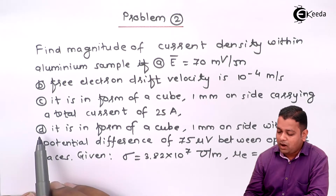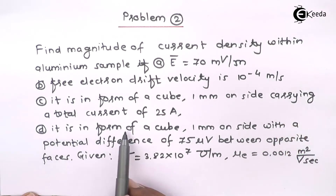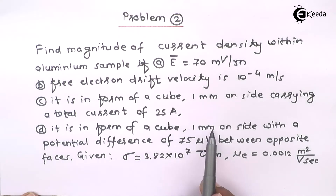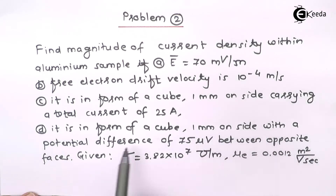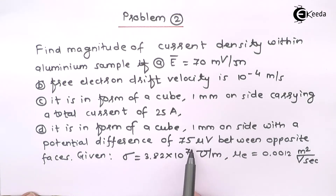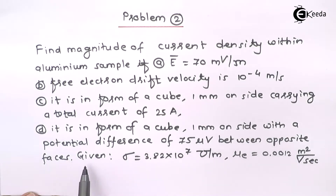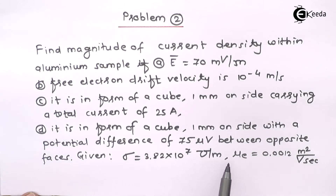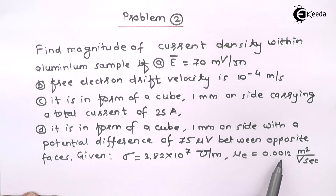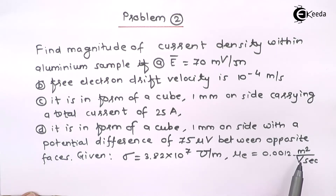Part B: free electron drift velocity is 10⁻⁴ meter per second. Part C: it is in the form of a cube 1 millimetre on side carrying a total current of 25 amperes. Part D: it is in the form of a cube 1 millimetre on side with a potential difference of 75 microvolts between the opposite faces. Given: sigma = 3.82 × 10⁷ mho/meter and mobility μ_E = 0.0012 m²/V·s.